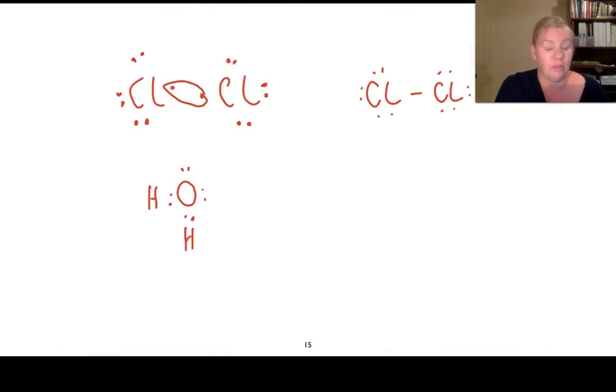The next one we need to look at is hydrogen chloride. So this time we have hydrogen with one. Chlorine, one through seven. And so you can see again, the two electrons here are being shared.